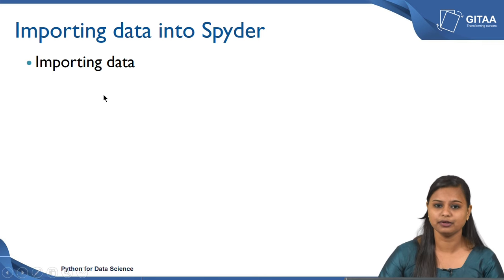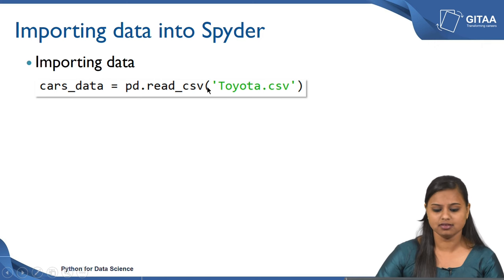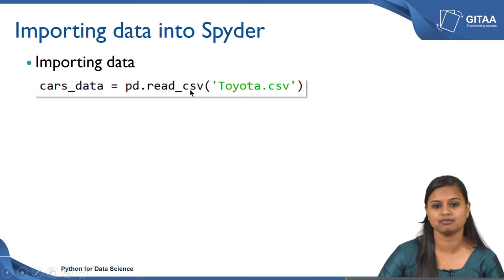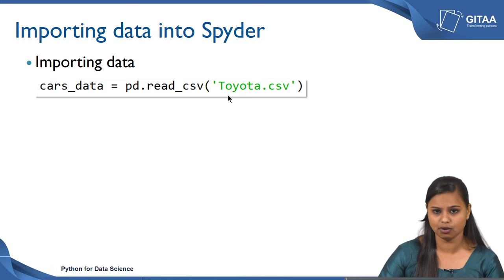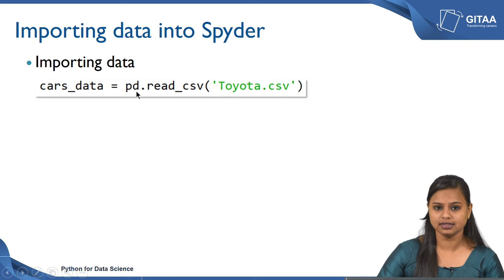To import the data into Spyder we use the command 'read_csv', since we are importing a CSV file. The 'read_csv' function is from the pandas library, so I have used 'pd.read_csv'. Inside the function you just need to give the file name within single or double quotes along with the extension '.csv'. I am saving it to an object called 'cars_data', so once I read it and save it to that object, 'cars_data' becomes the DataFrame.